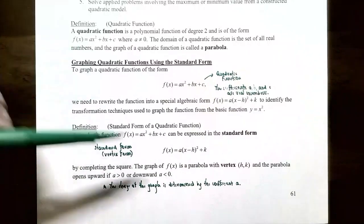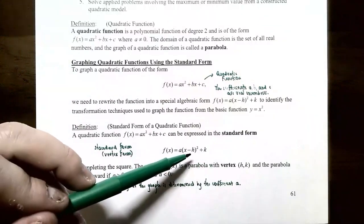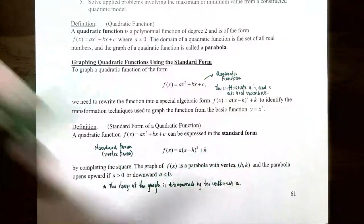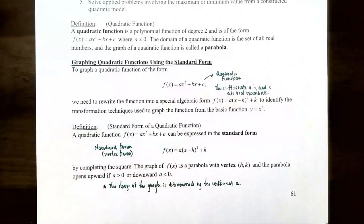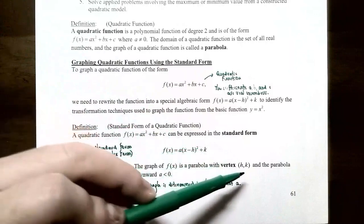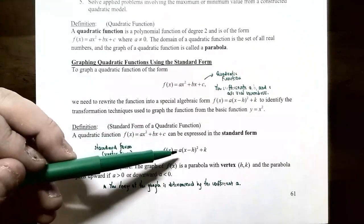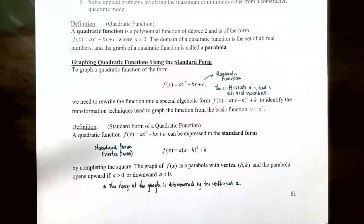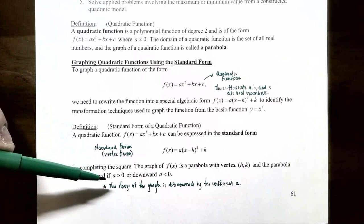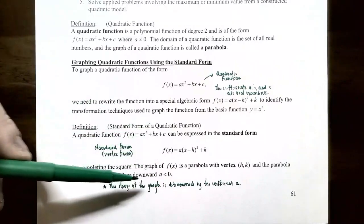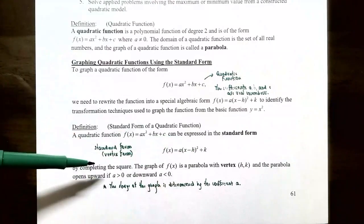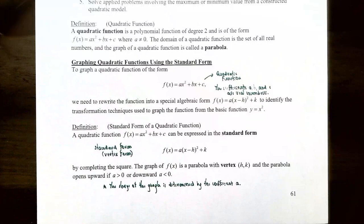In standard form f(x) = a(x − h)² + k, the vertex is the point (h, k). Note that inside the parentheses it's x subtract h, so the x-coordinate of the vertex is the value after the subtraction sign, and k is the y-coordinate. Standard form is sometimes called vertex form because it directly identifies the vertex.